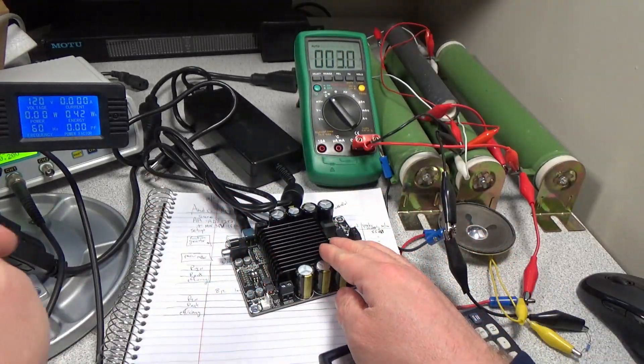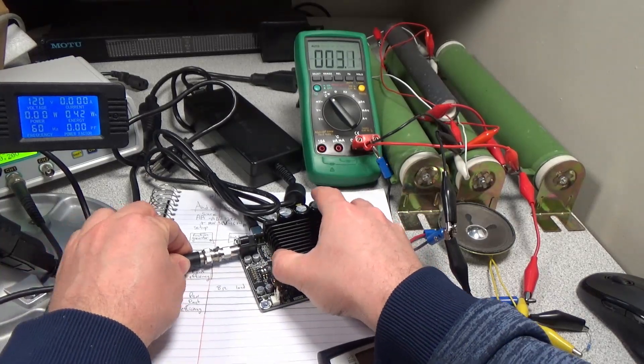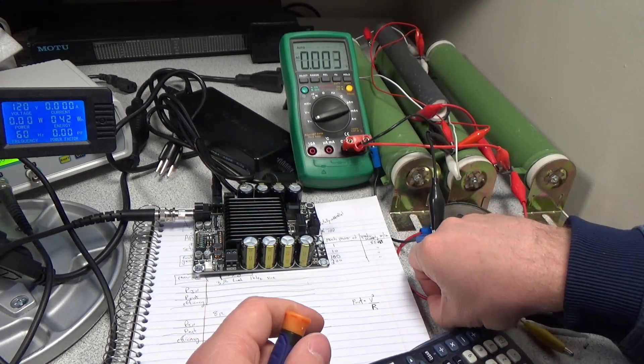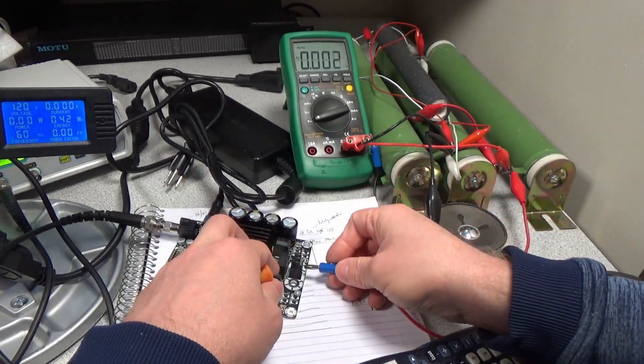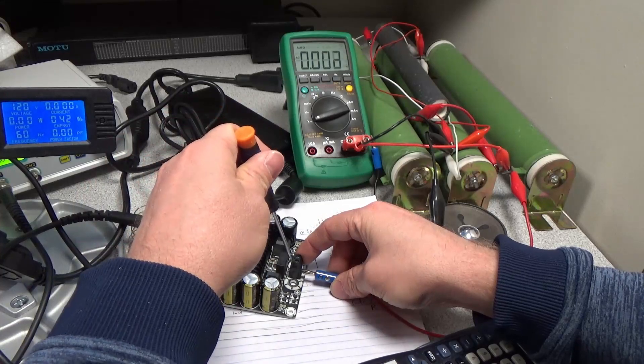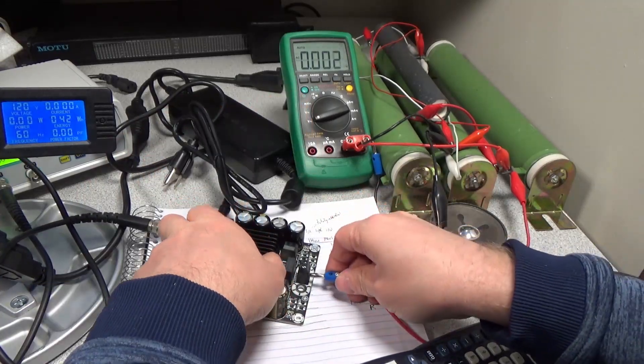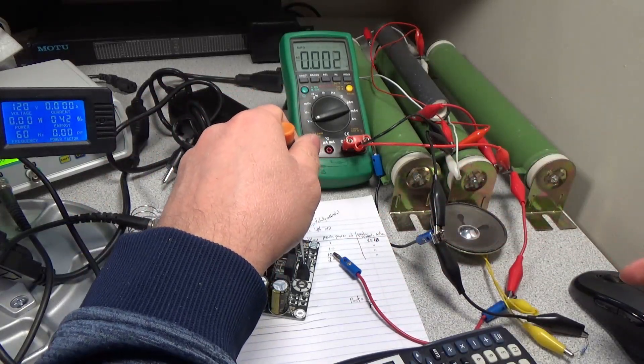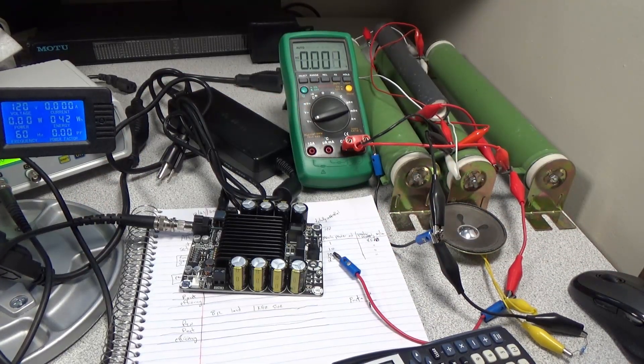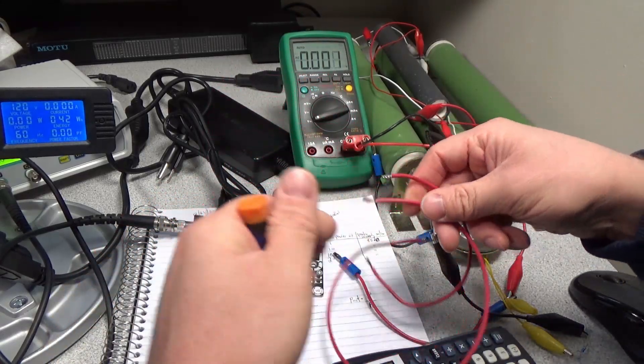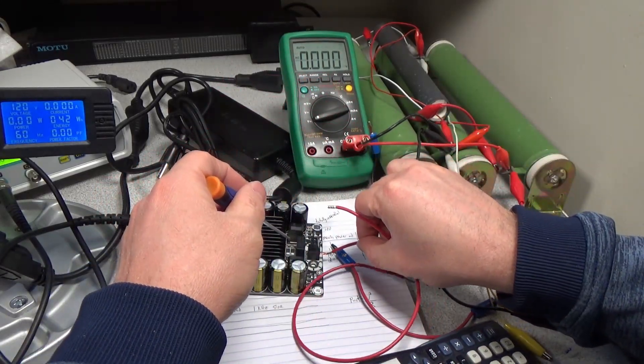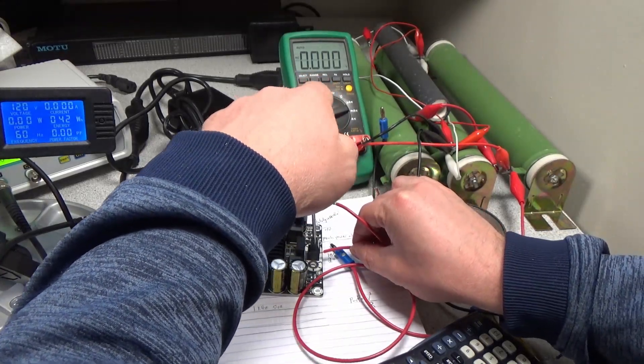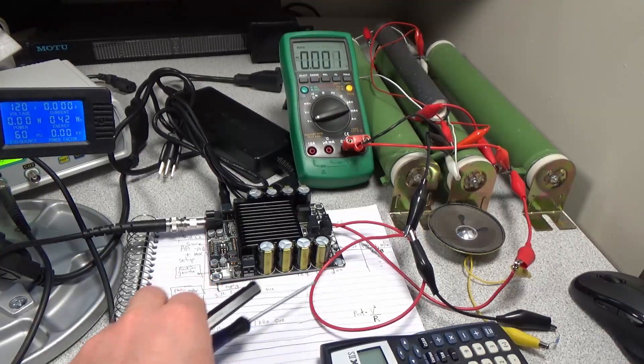Speaker terminals are out over here. And this is our signal from the function generator. Two open terminals. I'm hoping these will fit in here, they might not. Yeah, they don't fit. I need to get some wires. Alright, I got some wires. We should be ready to power this thing up now.